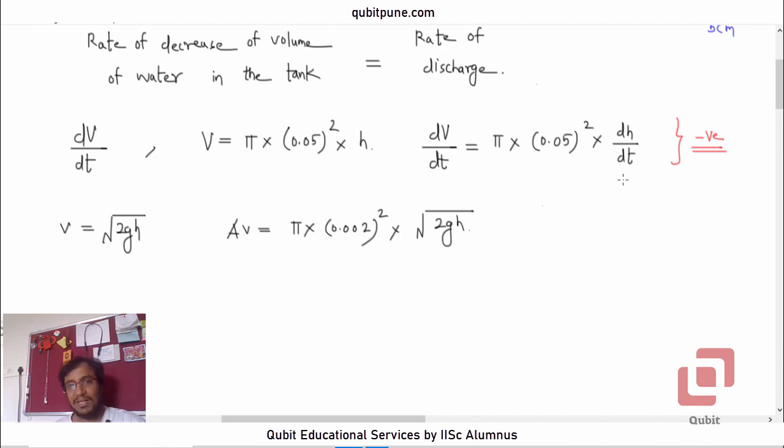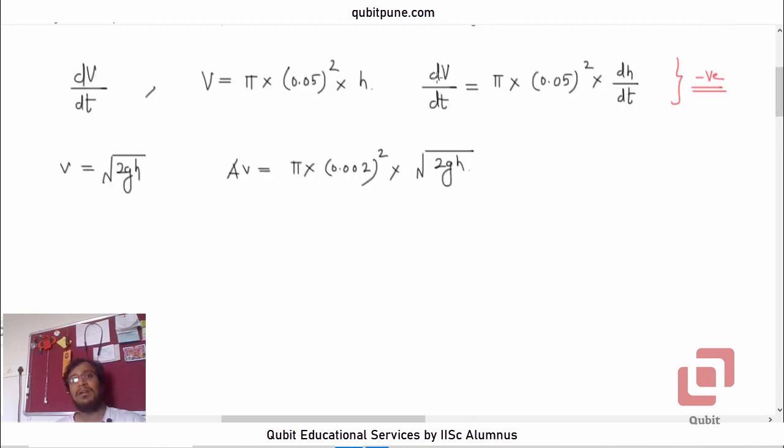Because it is negative, when we wish to equate, we must include a negative sign here. Because both h and V are decreasing functions of time, whereas this discharge rate is actually positive. So we will now equate the two.